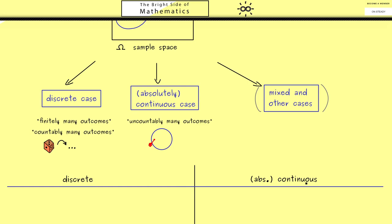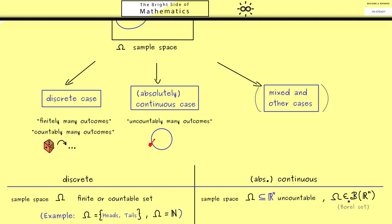Let's make a table to compare the discrete case and the absolutely continuous case. First, the sample space omega is a finite or countable set in the discrete case. For example, if you flip a coin, omega would be a set with two elements, or omega could be the natural numbers. On the other hand, for the continuous case, the sample space omega should be an uncountable set, usually a subset of R^n.